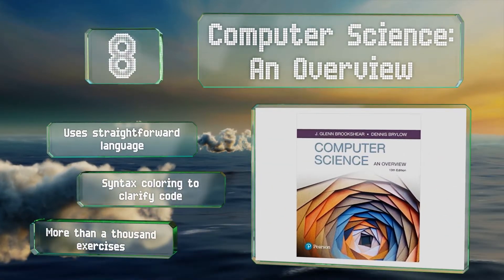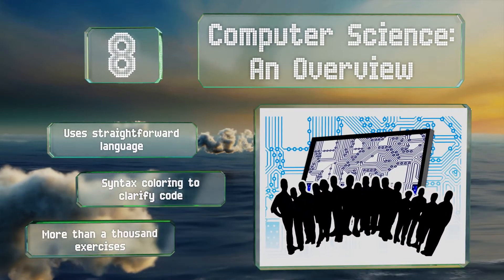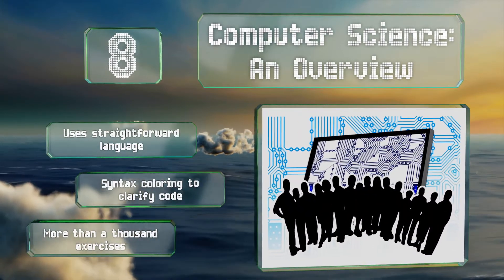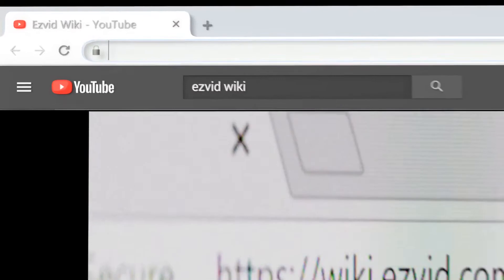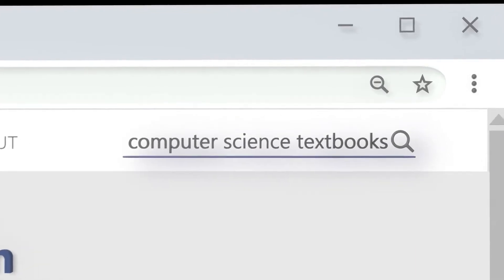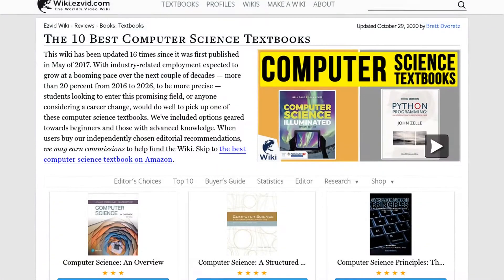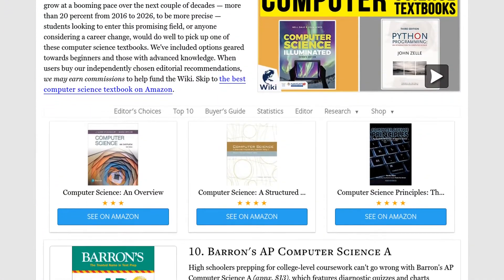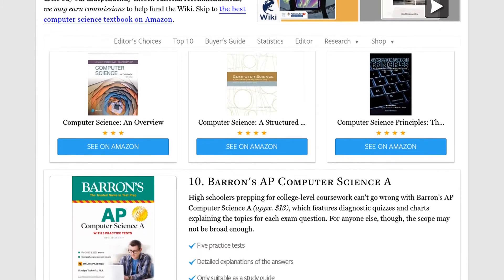Our newest choices can only be seen at wiki.easyvid.com. Go there now and search for computer science textbooks, or simply click beneath this video.